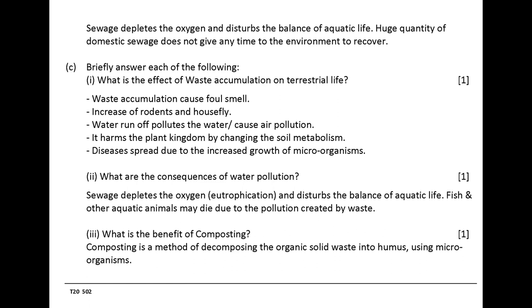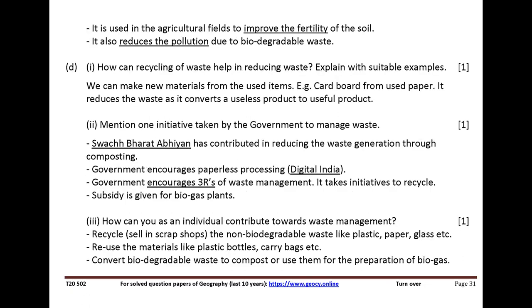What are the consequences of water pollution? Sewage depletes the oxygen and disturbs the balance of aquatic life. Fish and other aquatic animals may die due to the pollution created by waste. What is the benefit of composting? Composting is a method of decomposing organic solid waste into humus using microorganisms. It is used in agricultural fields to improve the fertility of the soil. It also reduces pollution due to biodegradable waste.